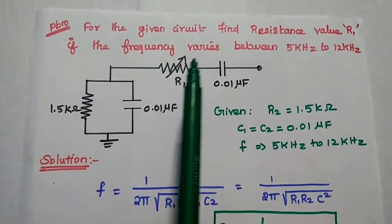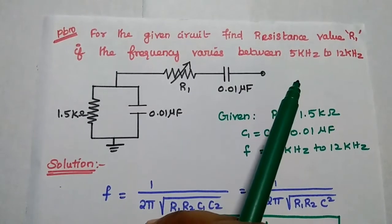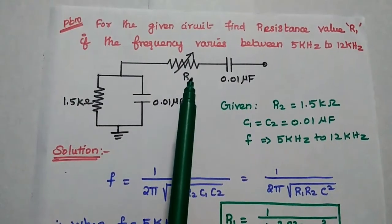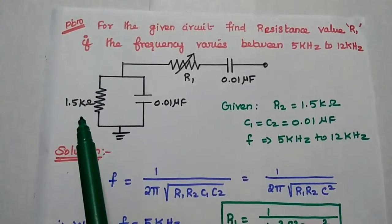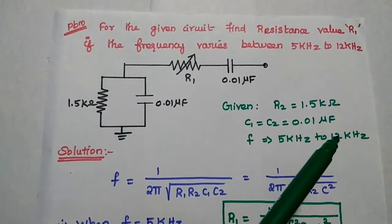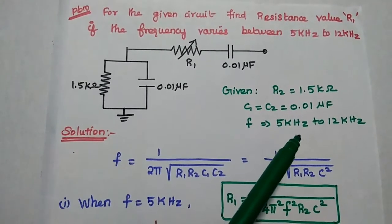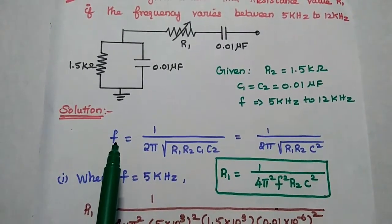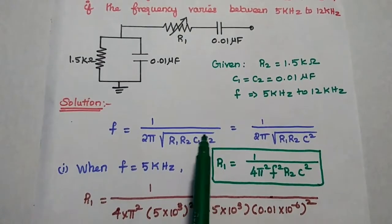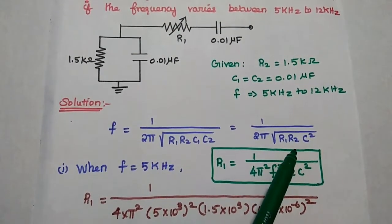Next problem: for the given circuit, find the resistance value R1 if the frequency varies between 5 kilohertz to 12 kilohertz. From the given diagram, R1 is a variable resistance, R2 is 1.5 kilo ohm, and C1 equals C2 equals 0.01 microfarad. We use the formula f equals 1 by 2 pi square root of R1 R2 C1 C2. Since C1 equals C2, this becomes 1 by 2 pi square root of R1 R2 times C squared.